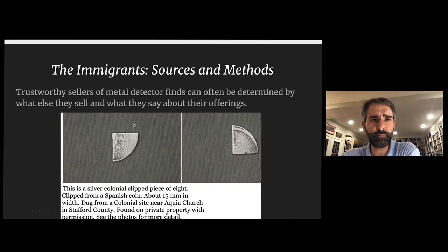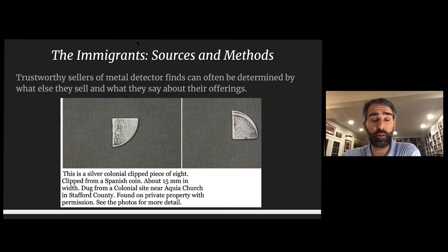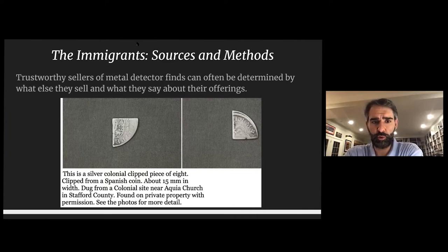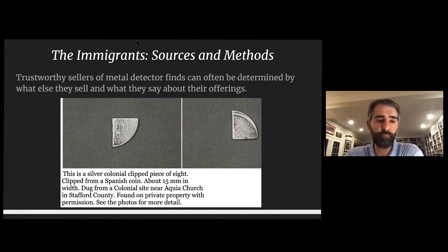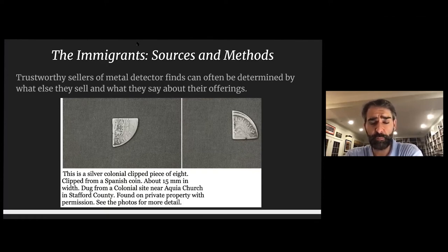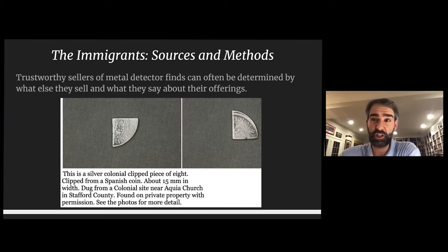Fortunately, some people do tell the truth on eBay. A trustworthy listing shows the kind of coin and story that match — like cut pistorines, which primarily come out of Virginia, found by people looking for Civil War artifacts. A credible seller gives approximate location, notes that it was found on private property with permission, and the coin matches what we'd expect. In that case, there's no reason to doubt the find.